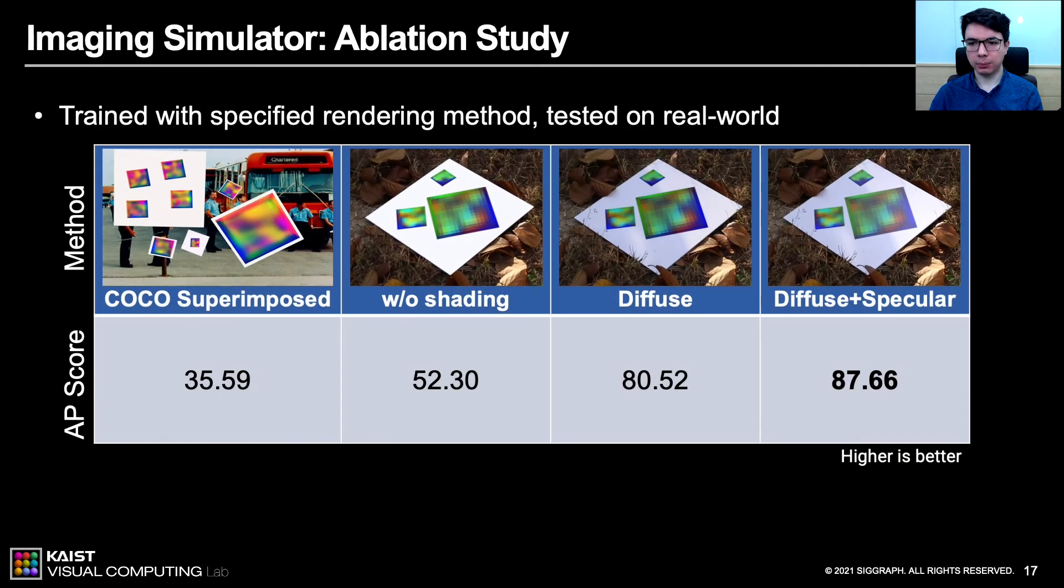To evaluate the impact of our differentiable rendering, we train our network with four different rendering configurations and test on real-world dataset. We test a superimposition method on Microsoft Coco dataset, and we test rendering without shading, diffuse-only shading, and diffuse-plus-specular shading. As a detection performance metric, we use the average precision, so-called AP metric, that tells how accurate the predictions and overlapping areas are for recalled values in the percentage scale. The results indicate that our realistic rendering method yields a significant improvement over other rendering methods.